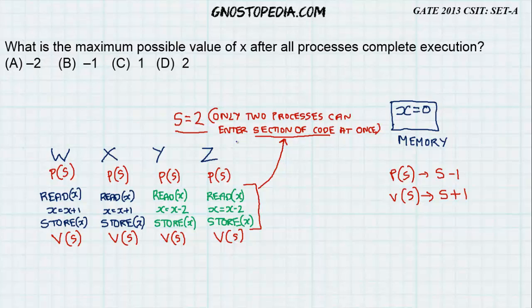What is the maximum possible value of x after all the processes complete execution? When I mean all, it tells me W, X, Y, Z should complete execution of its code once. Now, when a process is executing on the CPU, the CPU allocates some registers of itself to the process for the process's personal purposes.